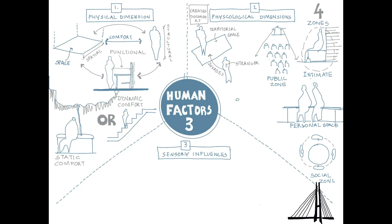There are appropriate distances that need to be maintained in different zones for human comfort. For example, when two people are standing in personal space, the distance should be a minimum of 18 inches to a maximum of 48 inches. For three people in a social zone, the minimum distance should be 48 inches to a maximum of 144 inches.